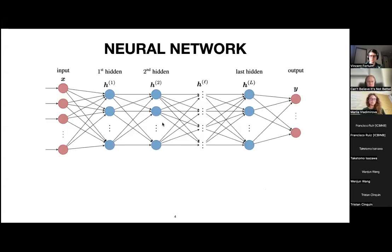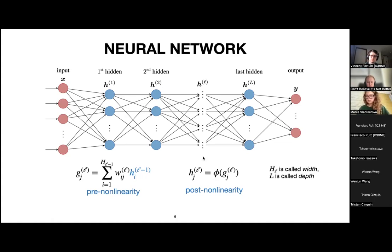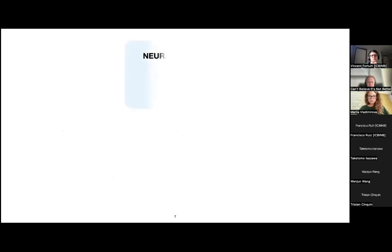Artificial neural networks have an input layer denoted by x, several hidden layers, and an output layer. In the hidden layers we have hidden units: each hidden unit is a linear combination of the outputs of the previous layer. The coefficients of these linear combinations are called weights, denoted by w. We then apply a non-linear activation function. Important notions are the width — the number of hidden units per layer — and the depth, the number of hidden layers.